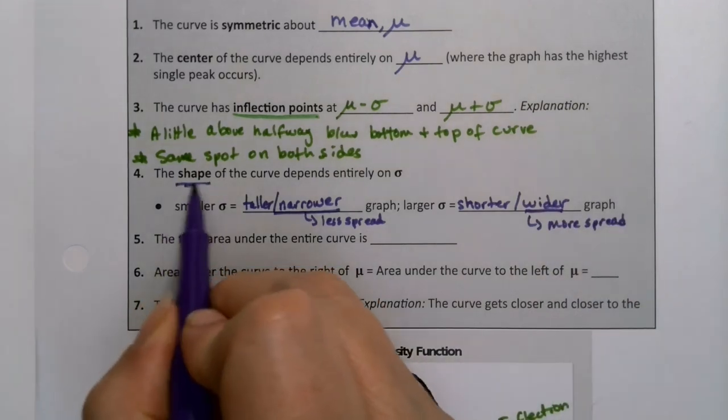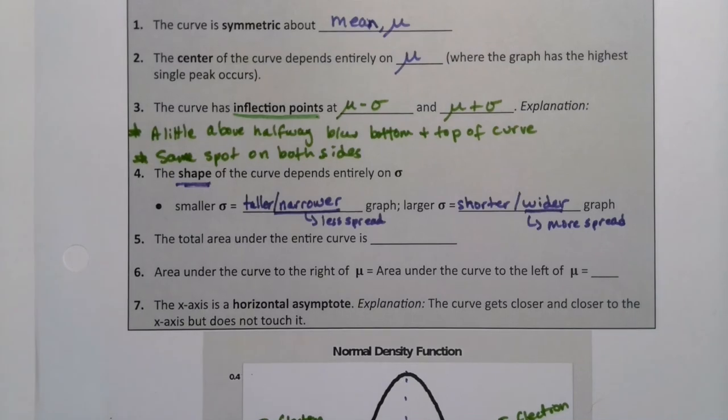So the shape of the curve, how tall and skinny it is, how short and wide it is, depends entirely on mu. The mu, excuse me, depends entirely on sigma. The mu has nothing to do with it. The mu just tells you where the center is, but it doesn't change what the curve looks like.